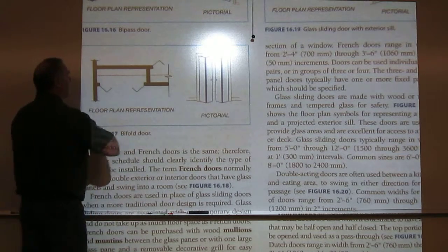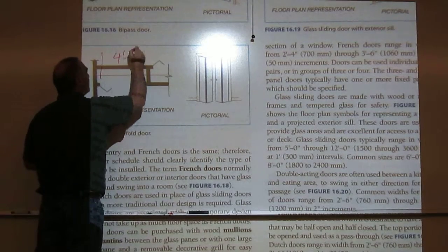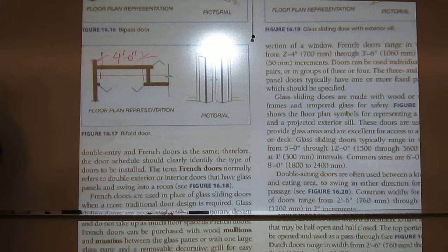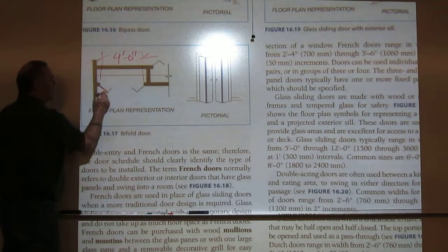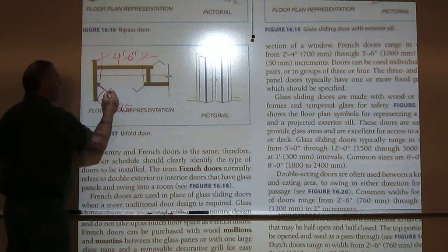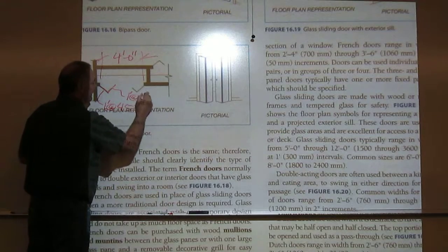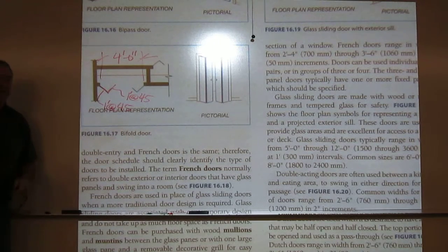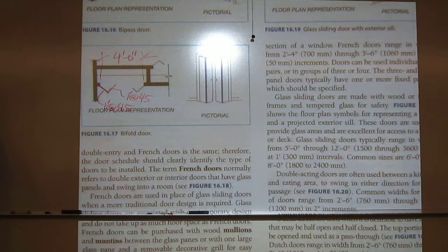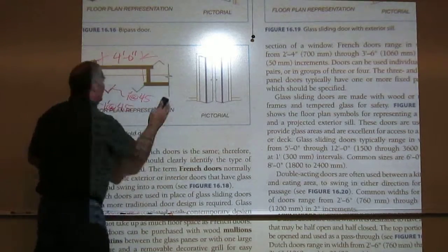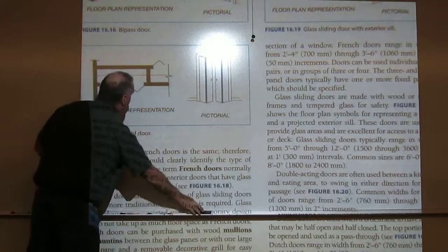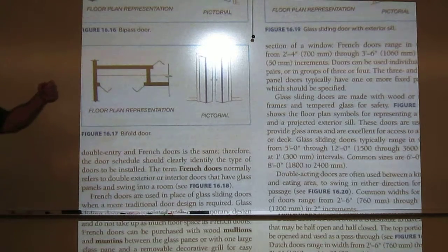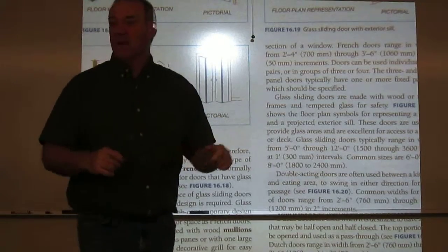Draw bifolds true size. If this is a four-foot opening, each panel is one foot. I draw one foot at 45 degrees, then another foot at 45 degrees, and the other side is one foot and one foot. If you don't draw true size you're going to get mistakes. Draw these lines representing the slabs that open, because you can get these for all different sizes — a two-foot opening that goes one way, or four-foot, five-foot, six-foot — you can buy them right off the shelf at Home Depot.